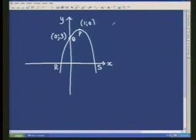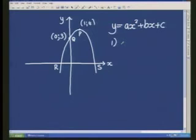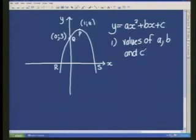They confirm the equation is y = ax² + bx + c, and the question asks to find values of A, B, and C. The teacher explains this is equivalent to finding the equation of the parabola, because once you know A, B, and C, you know the equation.